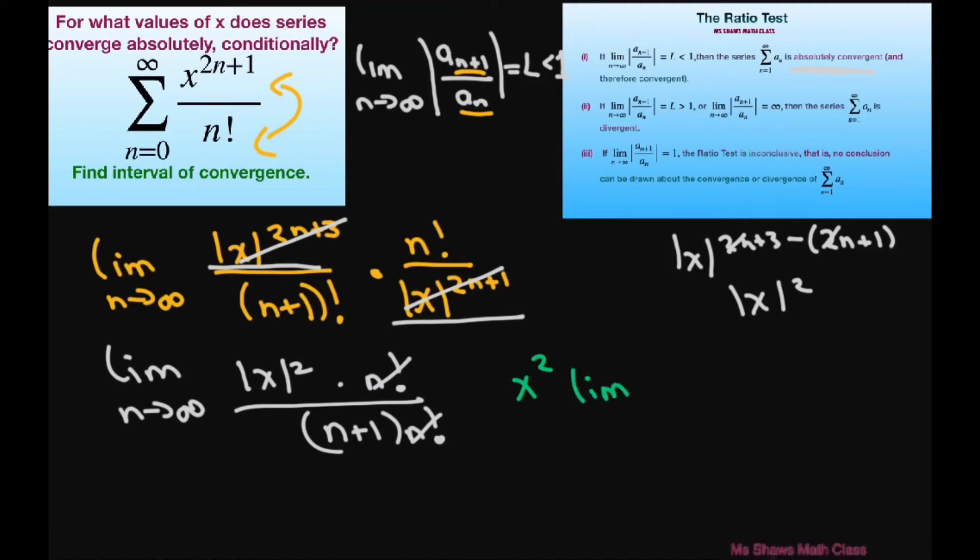Well, when you take this limit, this is just going to equal 0 because as this denominator gets larger and larger, it's going to get closer and closer to 0.